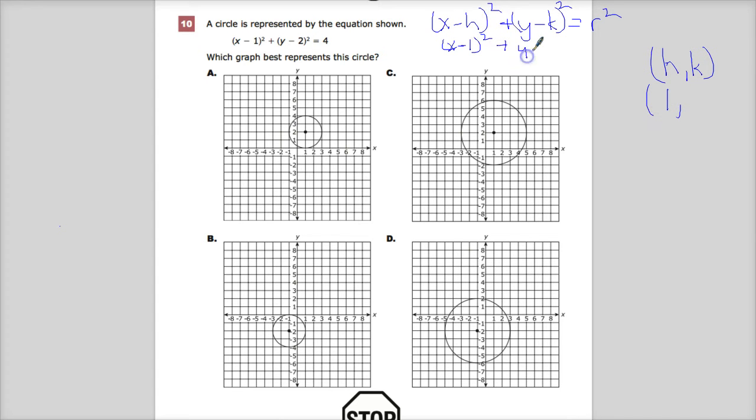Same thing here. y minus 2 means that the k value is actually just the 2. If this had been y plus 2, then it would be negative 2. You have to change the sign. It's my overall point.